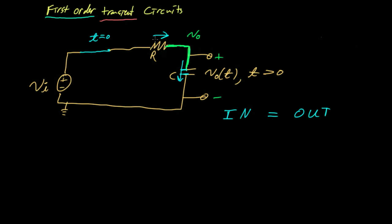What goes into our node V0 is the current IR — the current that flows through the resistor. What flows out of that node is the current IC that flows onto our capacitor. By nodal analysis and conservation of charge and current, we know that what goes in has to be equal to what goes out: IR equals IC.